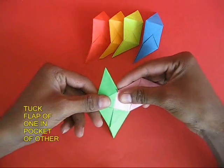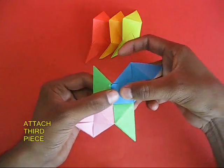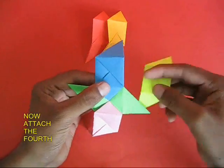Take two units, take the flap of one and put it in the pocket of the other. Take the third one and similarly place its flap in the pocket.